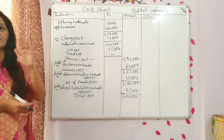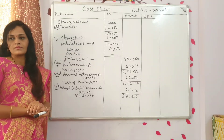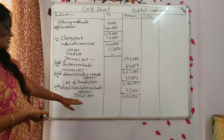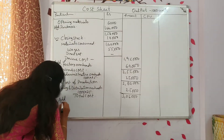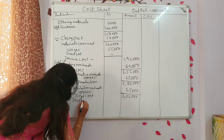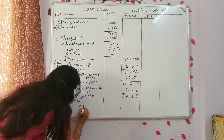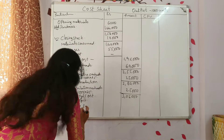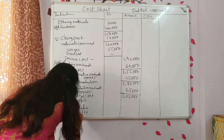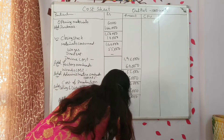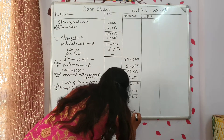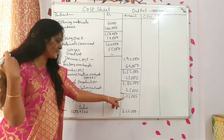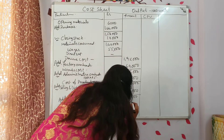Is there any profit or sales given in the question? Selling price per unit: 320. So the total selling price — there is no profit given directly. If you add profit to this, then you will get sales or selling price. Sales mentioned in the question: 320 per unit. 1000 into 320, you will get 3,20,000. Total cost is 3,05,000 and sales is 3,20,000, so the profit will be the balancing figure: 15,000.